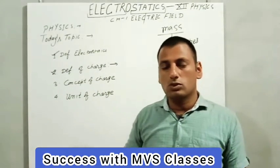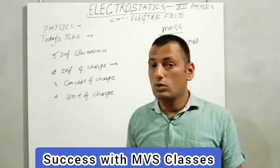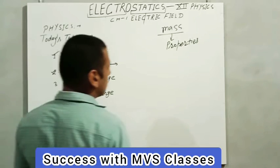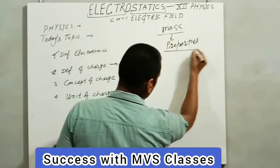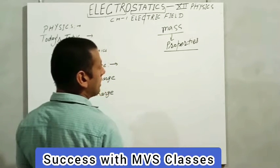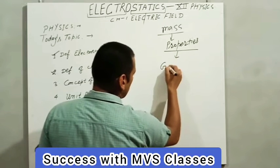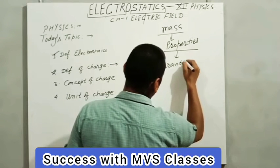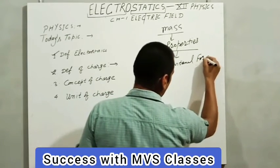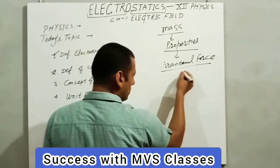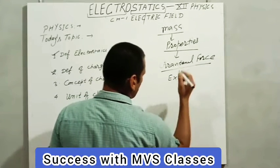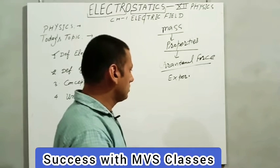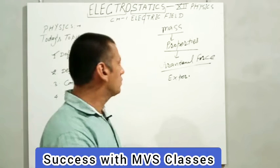अर्थात जो body होती है वो किसी भी object को अपनी और attract करती है, उसका कारण gravitational force है। Gravitational force के according, mass एक property है किसी भी object की, जिसके according कोई भी body gravitational force का behavior show करती है, उसको experience करती है, और show भी करती है। यानि वो खुद के ऊपर experience करती है तथा दूसरे के ऊपर भी effect show करती है। Similarly, जब charge की definition आती है।